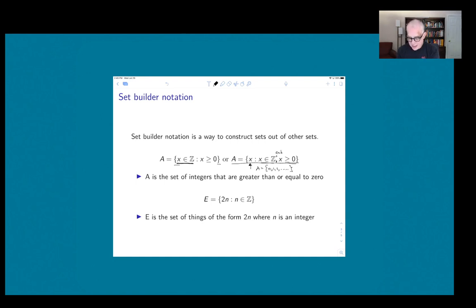So an element a is in E if a equals 2n for some integer n. So first of all, if a is 2n for some integer n, a is an integer, because it is two times an integer.